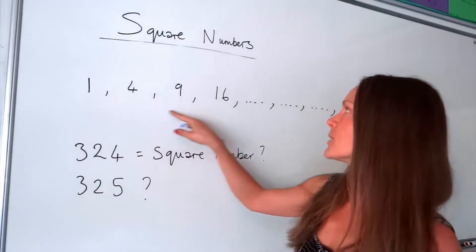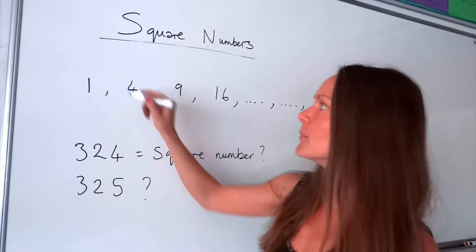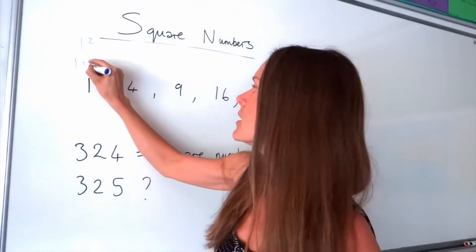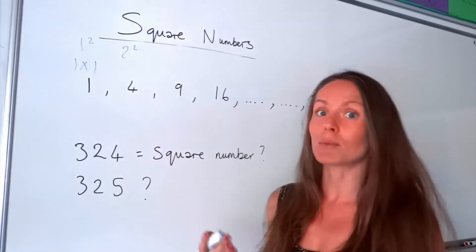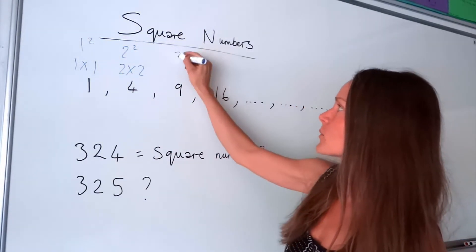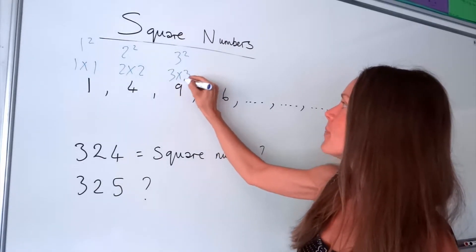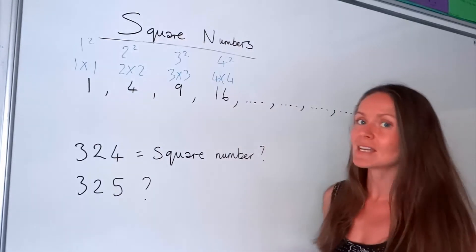Let's have a look at the first few here. Number 1 is the first square number, and to find that square number, we have to do 1 squared, which is 1 times 1. To find the second one, this one here, we have to do 2 squared, which is 2 times 2, which gives us 4. For the next one, we do 3 squared, which is 3 times 3, which gives us 9. And then we do 4 squared, which is 4 times 4, which gives me 16.